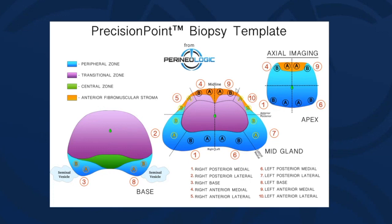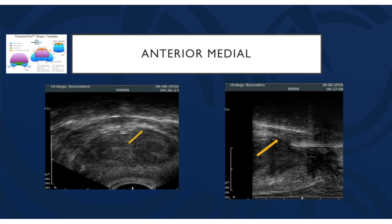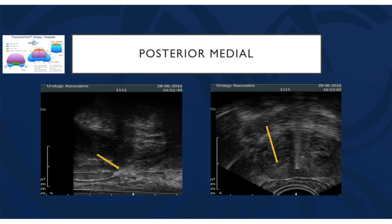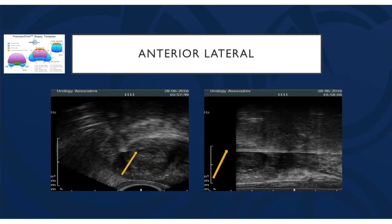This is the anterior lateral sector. You can see on sagittal that I'm above the transitional zone, about two millimeters underneath the capsule. On the axial image, the flash is at the very tip of the anterior horn — corresponding to the orange anterior lateral region on the template. The next slide shows the posterior medial. I love this biopsy — when I find cancer right under the urethra, it seems more likely to be clinically significant. With transrectal I would wind up in the urethra and get hematuria, but with this technique you're always 100% in the peripheral zone.